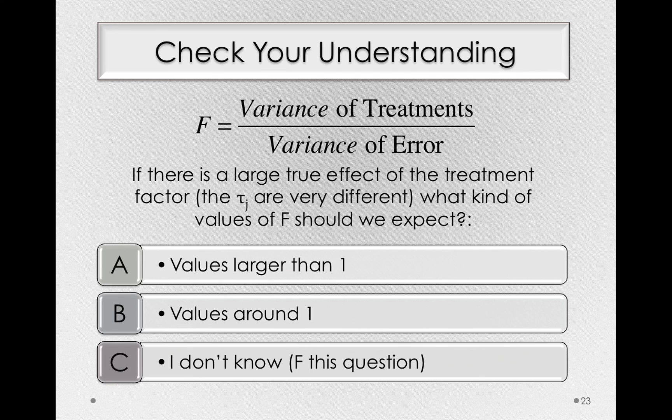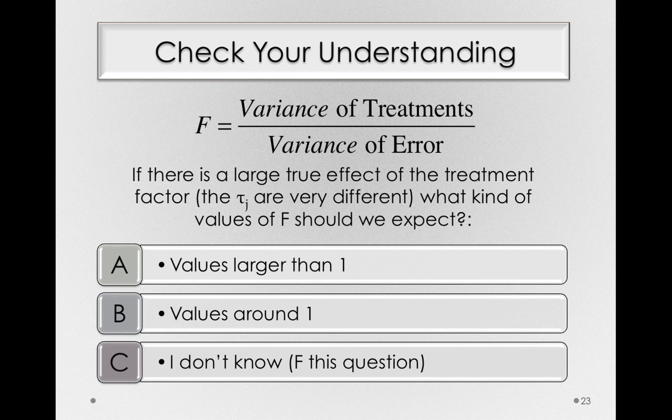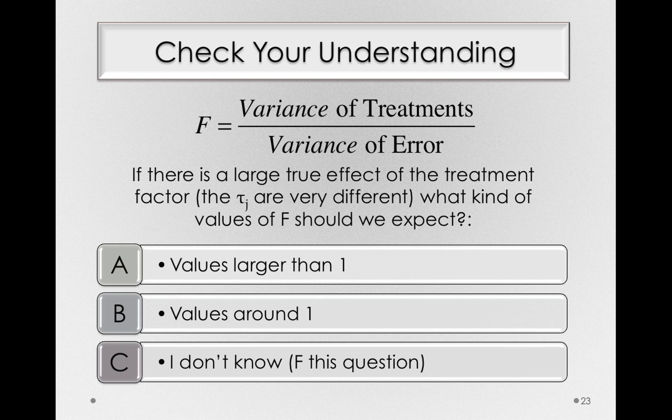So think about this question. If there is a large true effect of the treatment factor, that is, the tau sub j's in the population are very different, what kind of values of F do you think we should expect?